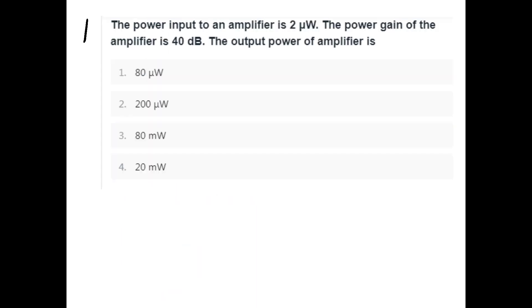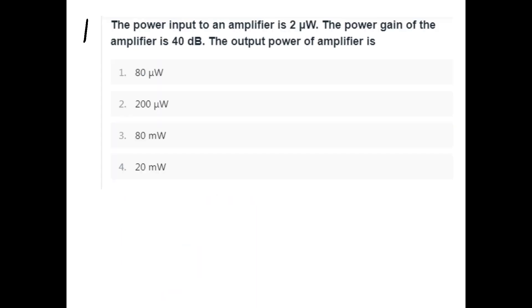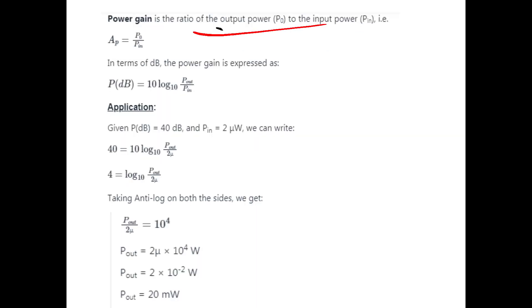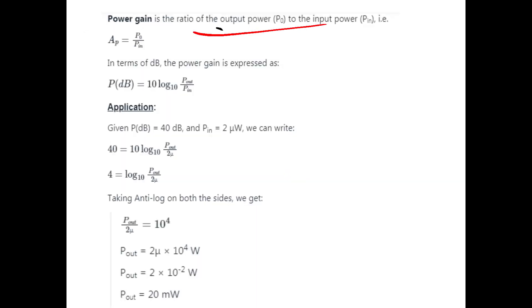Now let's solve the question. Power gain is 40dB and input power is 2μW. If we have power gain of 40dB, we substitute into the formula.